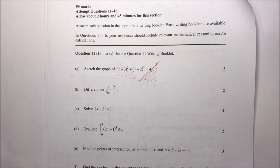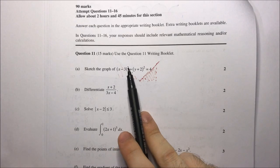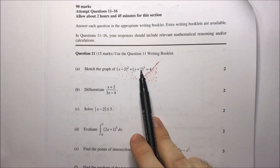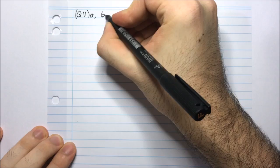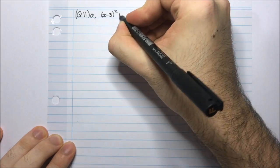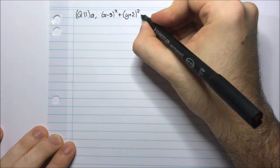In this video we're going to have a look at question 11 from the 2016 HSC Mathematics 2 Unit exam. Part a: sketch the graph of (x - 3)² + (y + 2)² = 4. Let's write it down: (x - 3)² + (y + 2)² = 4.